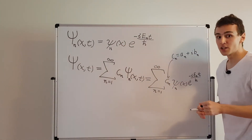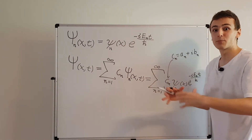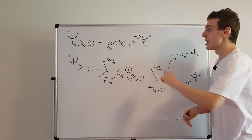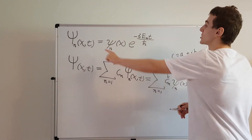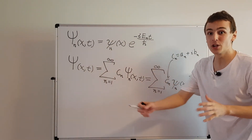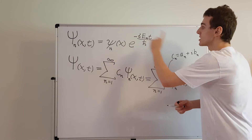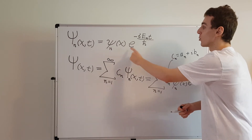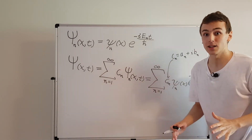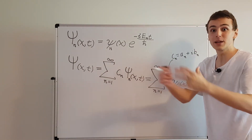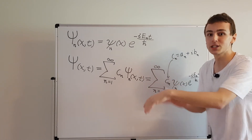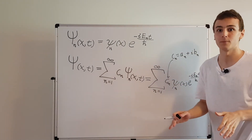Because when you take the probability density function, you're going to end up squaring all of this. When you take the squared amplitude, there are going to be cross terms. All the exponentials are not going to cancel out — they're actually going to mix together, and so you're going to have some kind of oscillatory behavior.